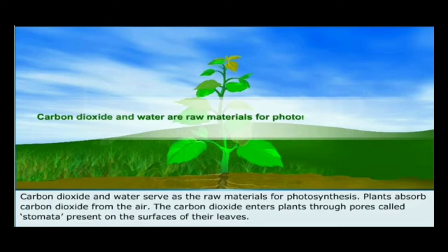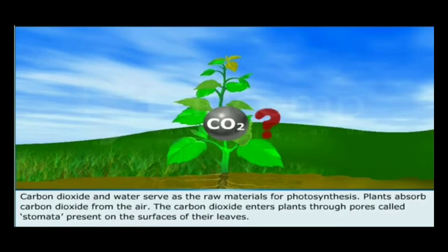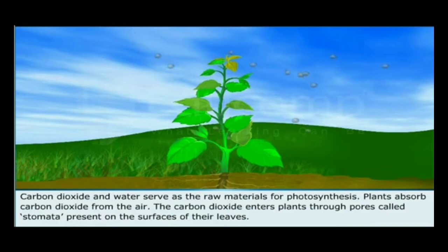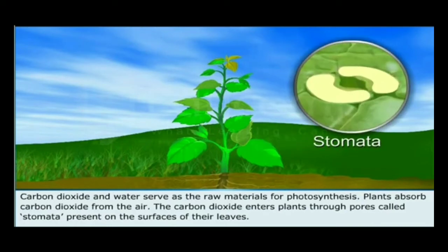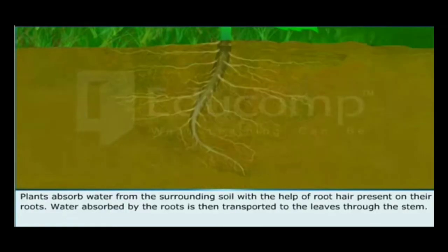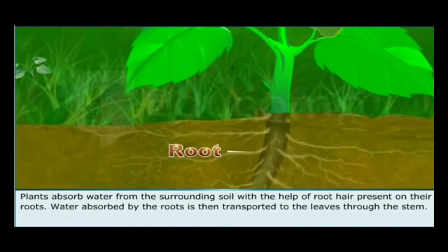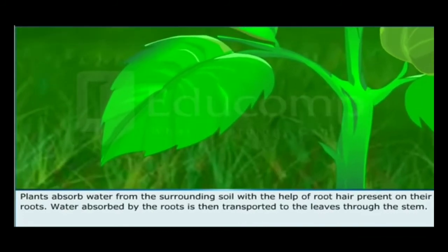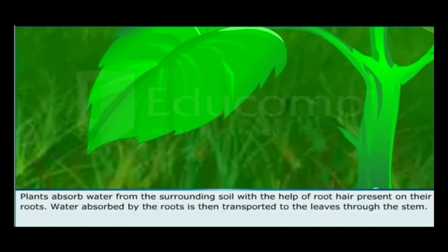Carbon dioxide and water are the raw materials for photosynthesis. Plants absorb carbon dioxide from the air. Carbon dioxide enters plants through the stomata present on the surface of their leaves. Plants absorb water from the surrounding soil with the help of the roots. Water absorbed by the roots is then transported to the leaves through the stem.